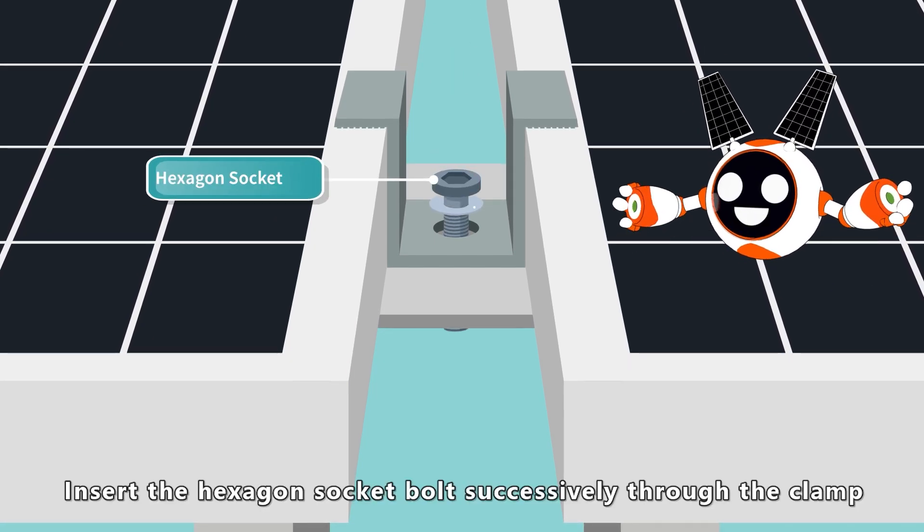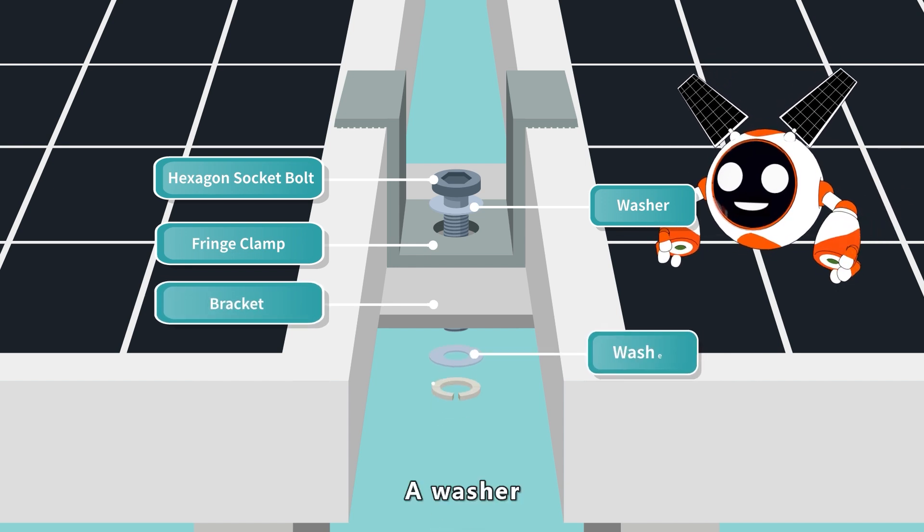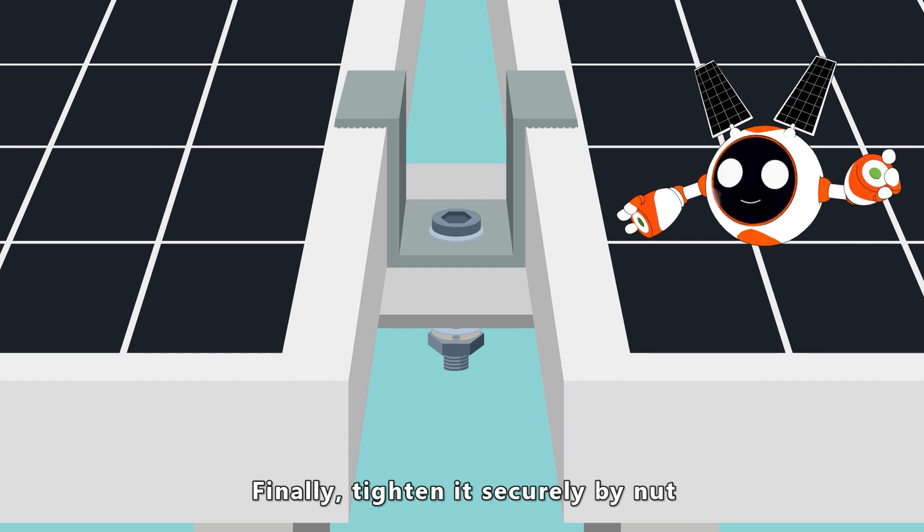Insert the hexagon socket bolt successively through the clamp, the bracket, a washer, and a spring washer in turn. Finally, tighten it securely by nut.